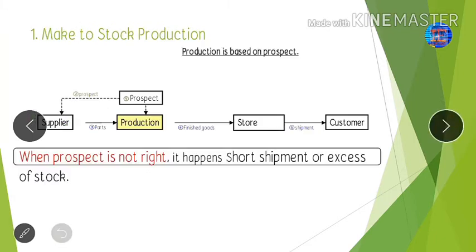In make to stock production, we produce parts in advance, build a store, and then when the customer demands the parts, we dispatch to them. It is totally dependent on our forecast. When the forecast is wrong, it can result in short shipment or excess stock. For example, if we produce 1,000 parts expecting that demand, but the customer only demands 100 or 200 pieces, there will be excess stock. So make to stock production is not reliable.